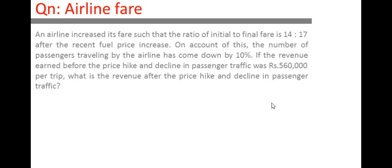This is very simple. If the revenue earned before the price hike means the earlier price is rupees 14, and the passenger traffic revenue was rupees 5,60,000 per trip. Now after the price hike, what is the revenue with declining passenger traffic? That is what the question is all about.